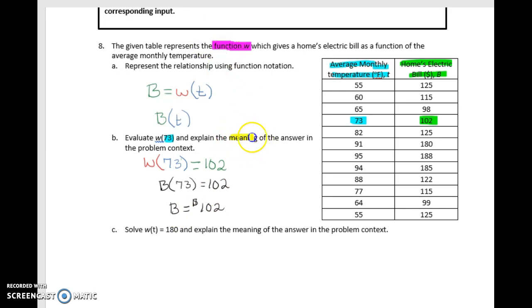The other part of the statement is saying what does this mean in context to the problem? So as with all things, since we're talking about co-variation, there's always an input part of the statement and an output part of the statement because both pieces must be involved. So we're going to say when or if the temperature is 73 degrees Fahrenheit, and now my output part, the cost or the bill is $102. So that's how we would state that in context.